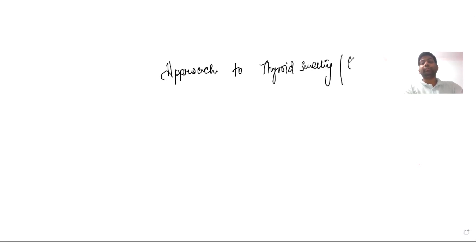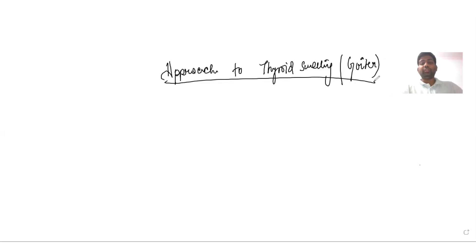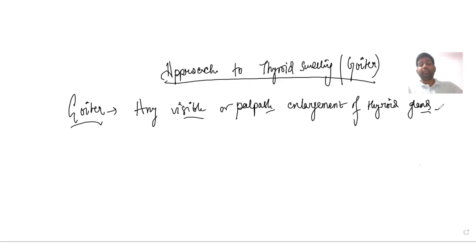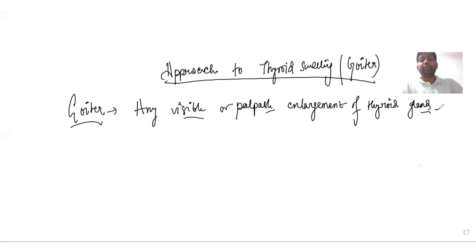Thyroid swelling is also known as goiter. The basic definition of goiter means any visible or palpable enlargement of the thyroid gland. Having seen this definition, let us look into how we approach a patient when they come to us in an OPD with a thyroid swelling.